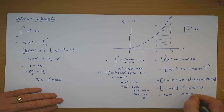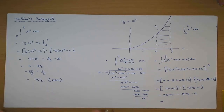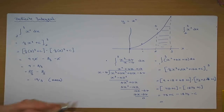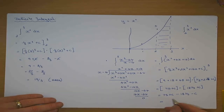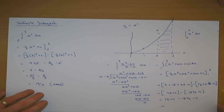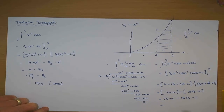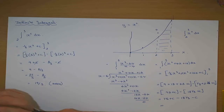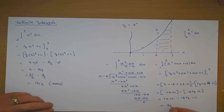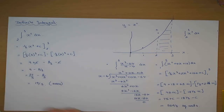Which is equal to 75 plus c minus 18 and a third minus c. The c's always cancel when you're using the definite integral. Seventy-five minus eighteen and a third — putting it all over three — leaves me with fifty-six and two thirds. And that's an area — square units — because I have calculated an area.